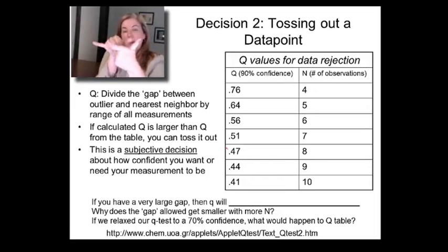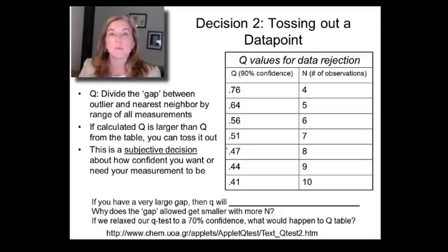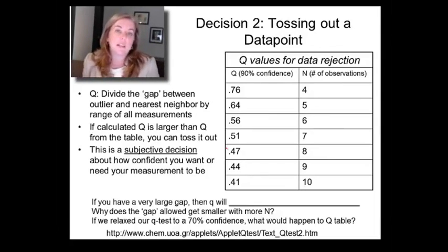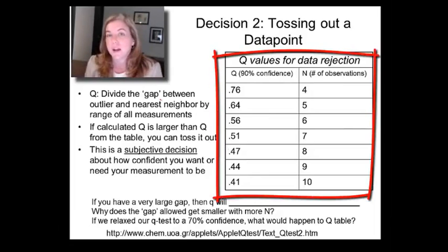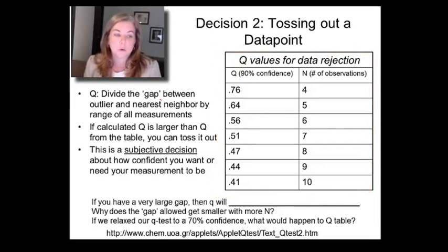If the gap is so big and it's such a big fraction of the total range of the data, say here's your gap and here's your range and this is your outlier, well then you can probably throw it out because the Q might be 0.7, 0.8. What you do is you calculate Q and then you use the table shown here to help you decide. Say you did five measurements and you want to throw out an outlier that has a Q of 0.64, or say 0.8. Well, you can because if your Q is larger than the numbers shown in this table, you're allowed to throw it out.